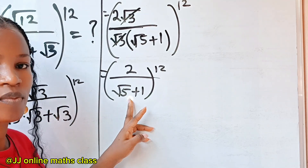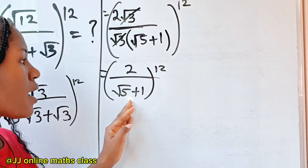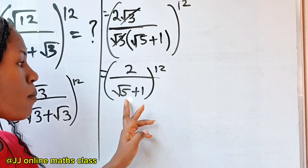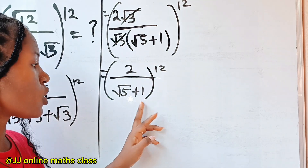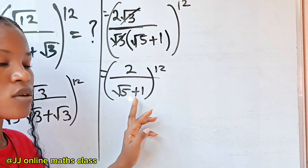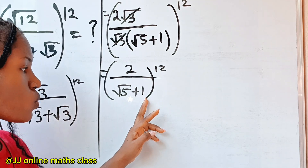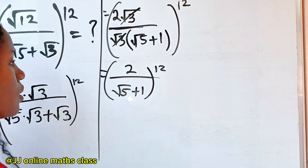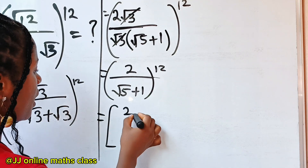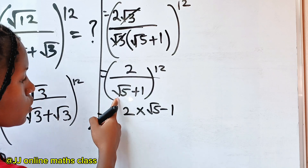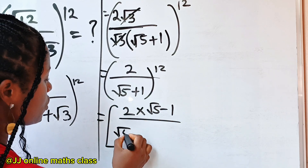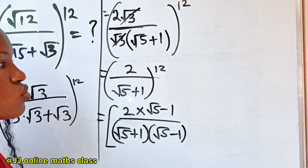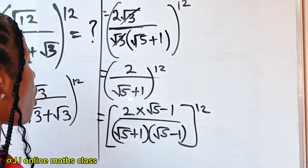Remember that this is a surd and in the rule of surds it is not right to leave a surd as your denominator. Since root five is a surd, we are going to rationalize this fraction by multiplying the numerator and denominator by the conjugate of this denominator. The conjugate of root five plus one is root five minus one — the sign changes to minus. So we multiply the numerator by root five minus one and also multiply the denominator by the same thing, raised to the power of 12.